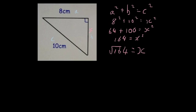So I just tap into my calculator the square root of 164 and that gives me 12.8 to one decimal place. So X equals 12.8 centimetres to one decimal place, 1dp.